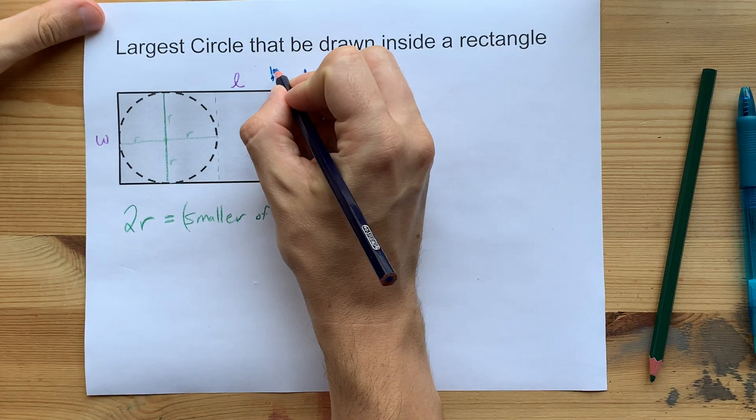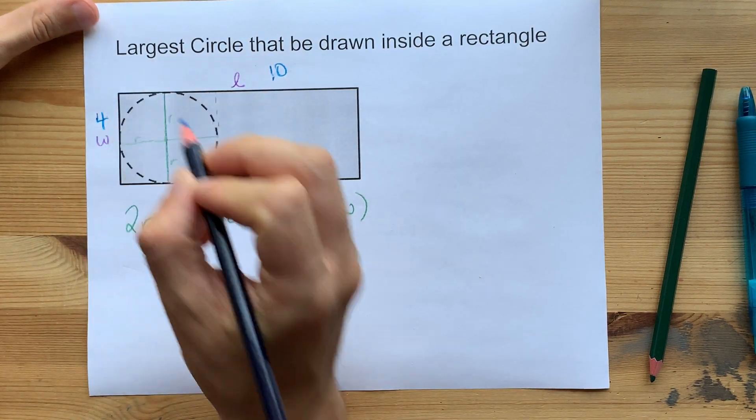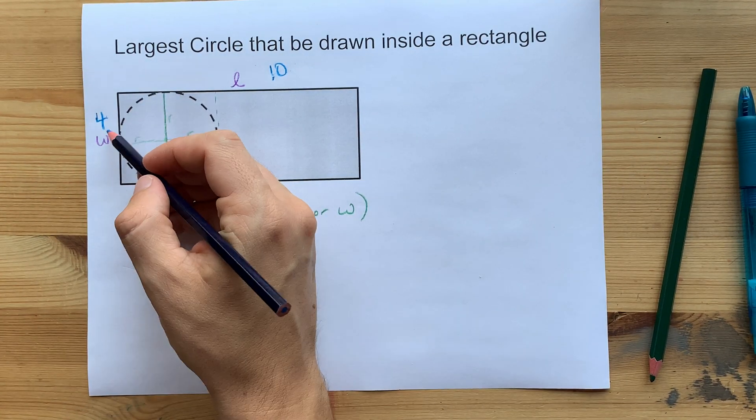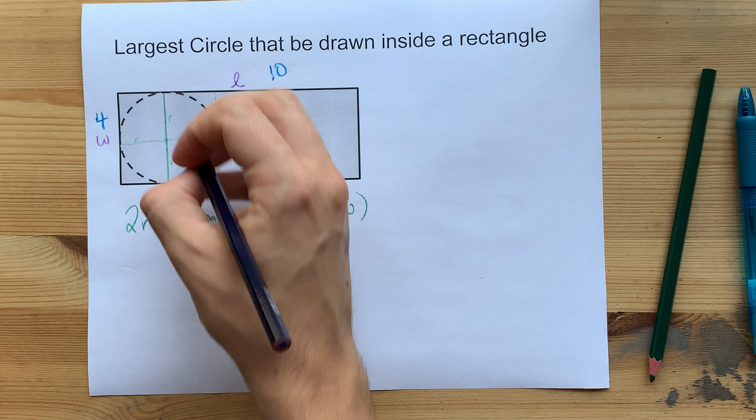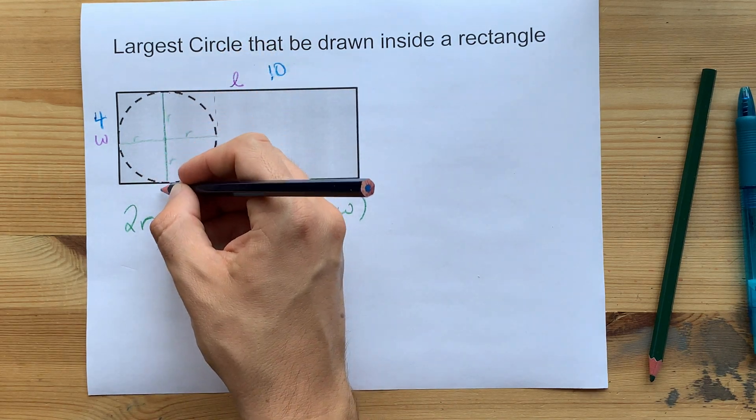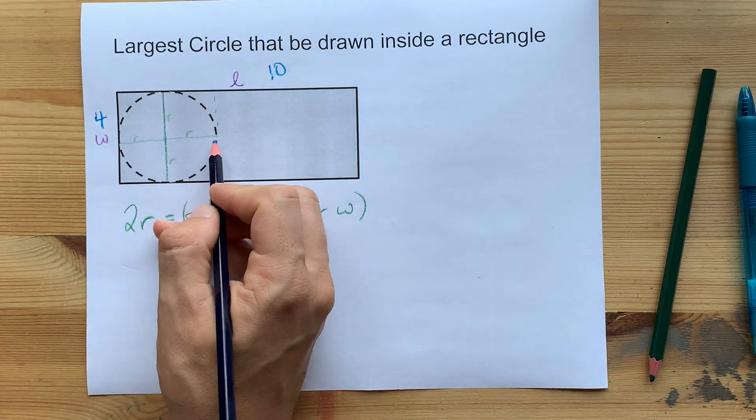If you had a 10 by 4 rectangle, this circle can only ever be 4 tall, so it can only be 4 wide as well.